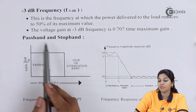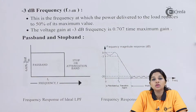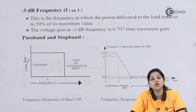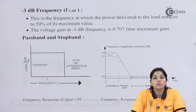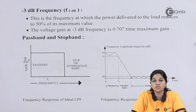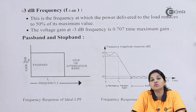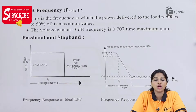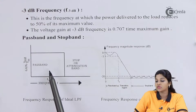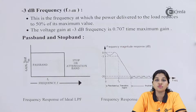The next characteristics are pass band and stop band. We will consider the frequency response of a low pass filter. A low pass filter passes frequencies below the cutoff frequency and stops or attenuates frequencies above the cutoff frequency. The cutoff frequency acts as a boundary between pass band and stop band. This is the ideal low pass filter frequency response, and this is the practical frequency response of a low pass filter.